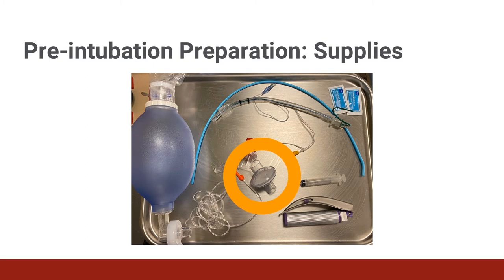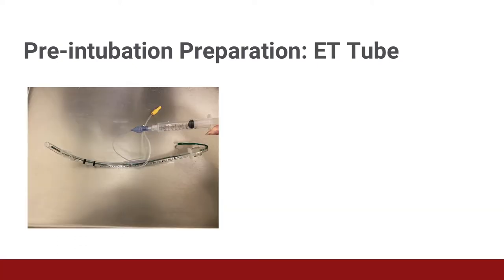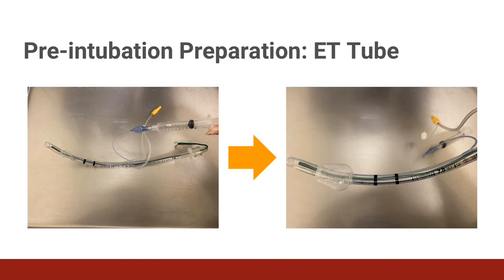If available, a viral filter is recommended to be integrated into both the ventilator and ambu bag circuit. It is critical to check the function of your endotracheal tube cuff using a syringe to inflate and ensure there are no tears or air leaks. Be sure to fully deflate the cuff prior to the procedure. Also, make sure that your stylet is in the endotracheal tube and shape the tube to your desired style, either curved or hockey stick.